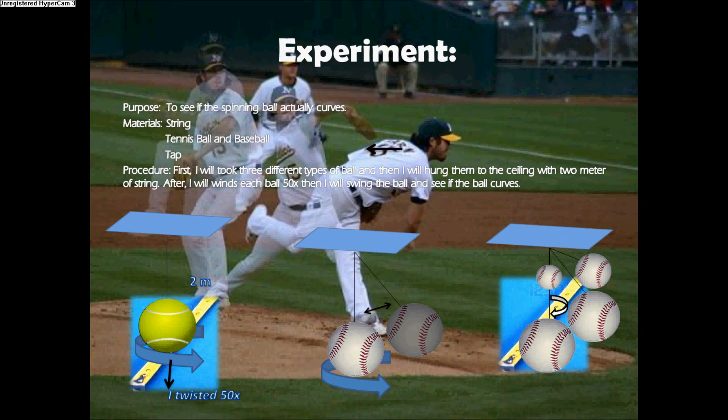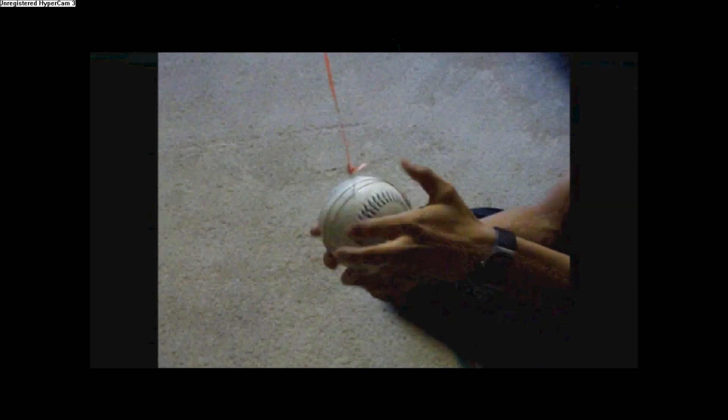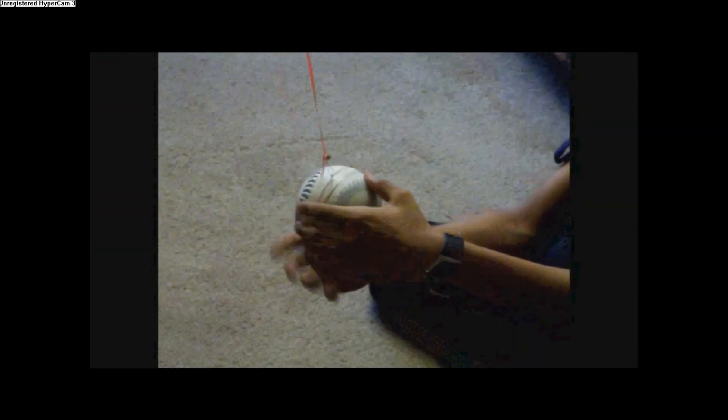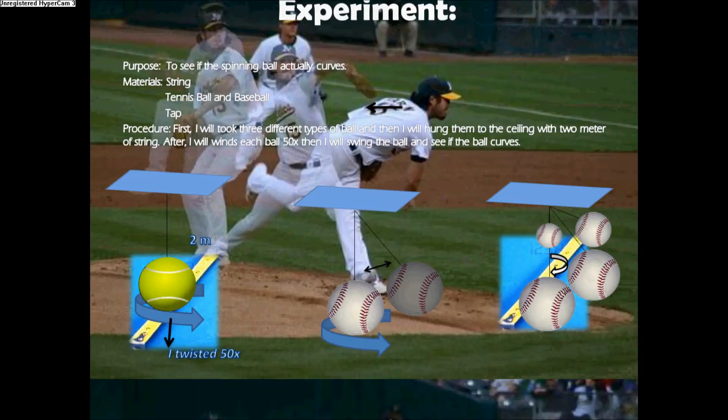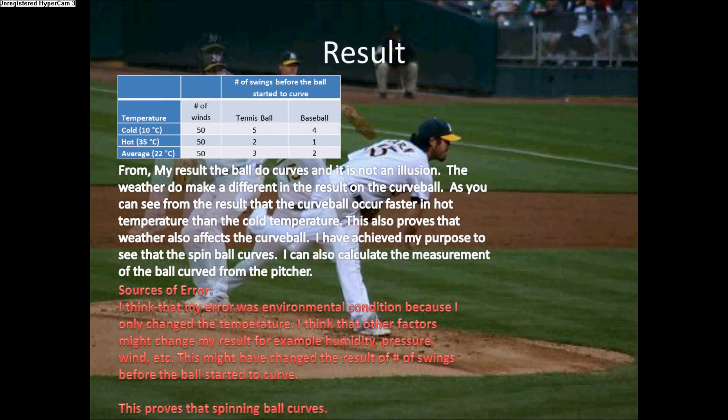In the experiment, my purpose was to see if the ball curves. I took a tennis ball and a baseball, winding the ball to make it spin, and I did this 50 times. From my data and results, I was able to successfully prove that a spinning ball does curve.